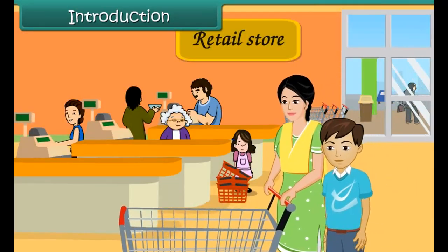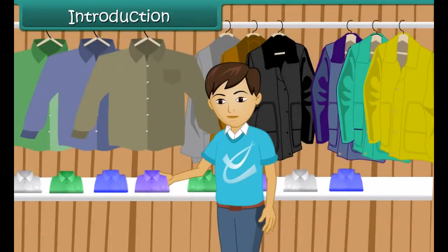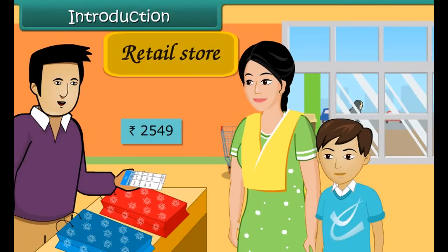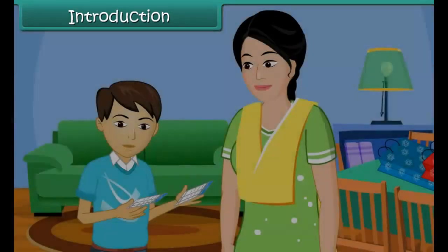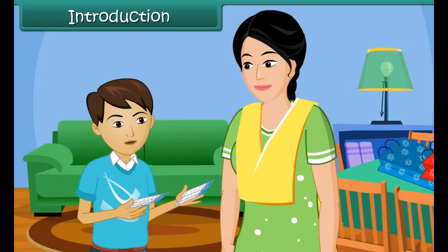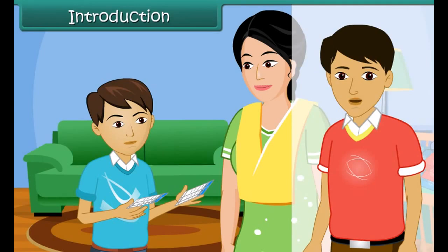That evening, mother and Anuj visited the shop. Anuj bought two shirts for rupees 2549. Her mother bought some grocery items and the bill amounted to rupees 2350. At home, he compared the total amount of the two bills. He told that his shirt's cost was more than all the grocery items. How was he able to tell?